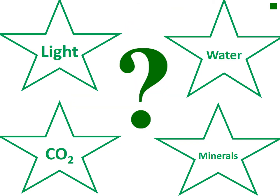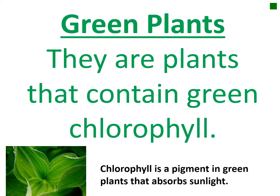Green plants have four main needs: light, water, carbon dioxide (CO2), and mineral salts. Green plants are plants that contain a green pigment called chlorophyll. Chlorophyll is the pigment in green plants that absorbs sunlight.